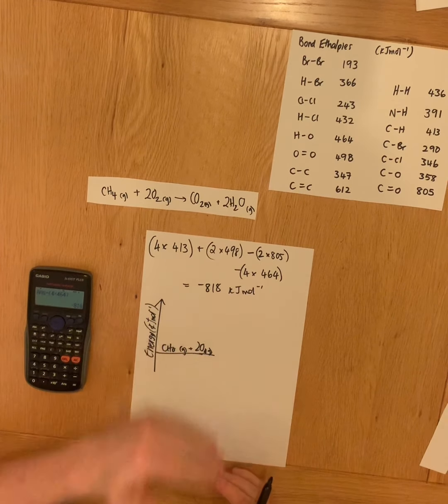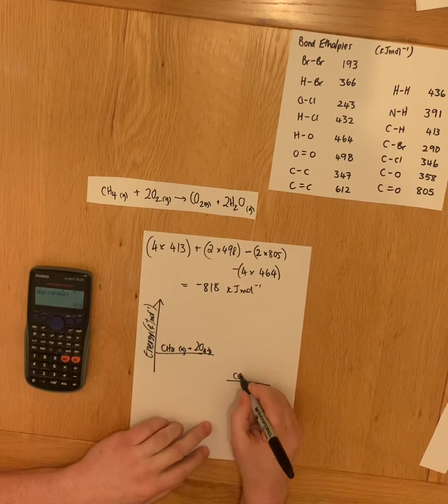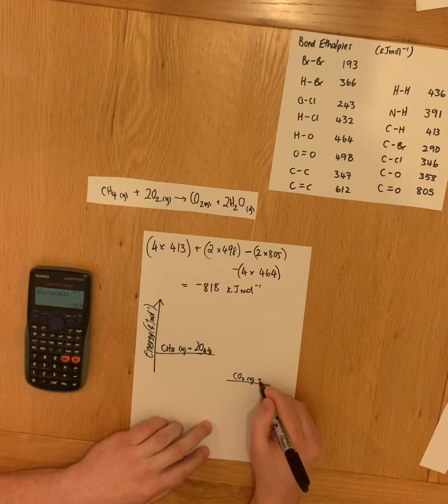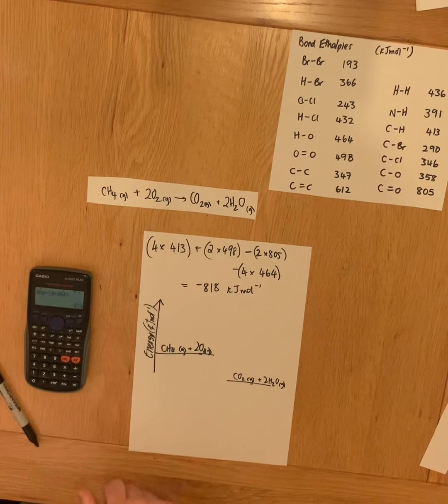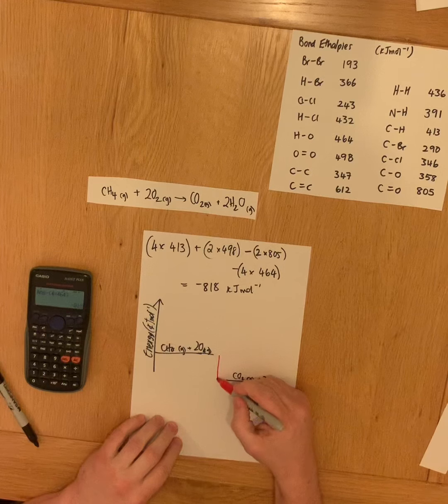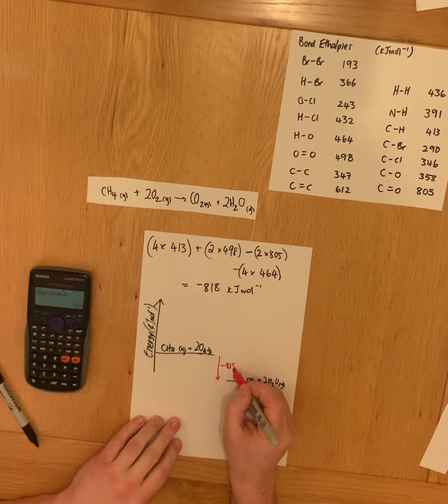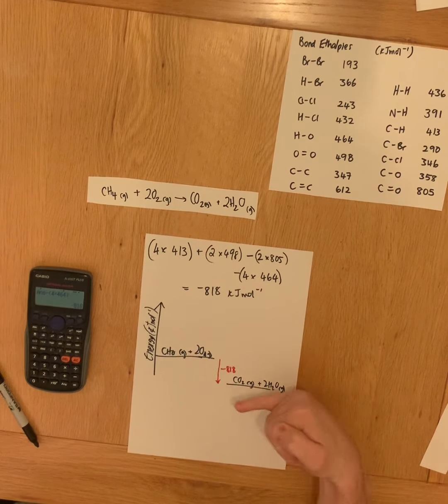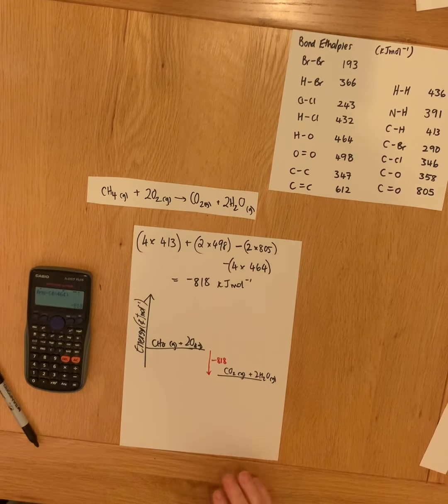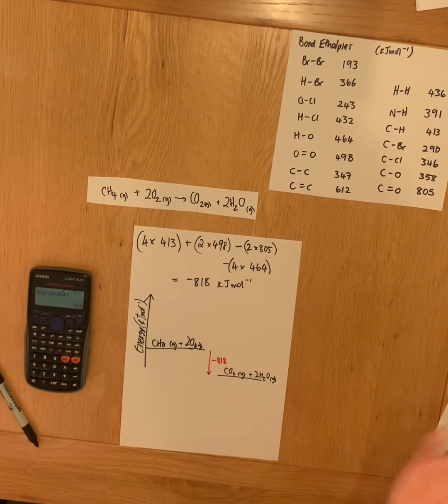is higher than the energy stored in our products because that energy difference has been released. And we know that the enthalpy change here, minus 818 kilojoules per mole, is due to there being less energy stored in our product than in our reactants, which is why this reaction is exothermic overall.